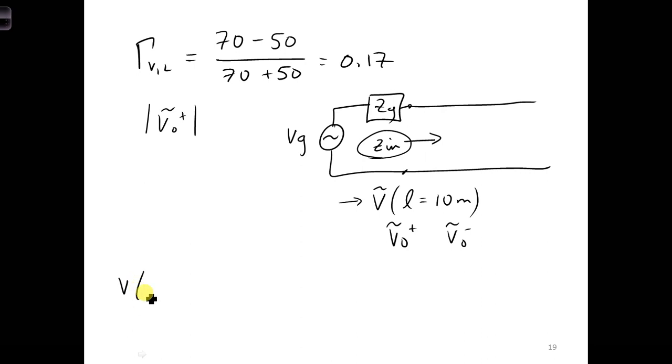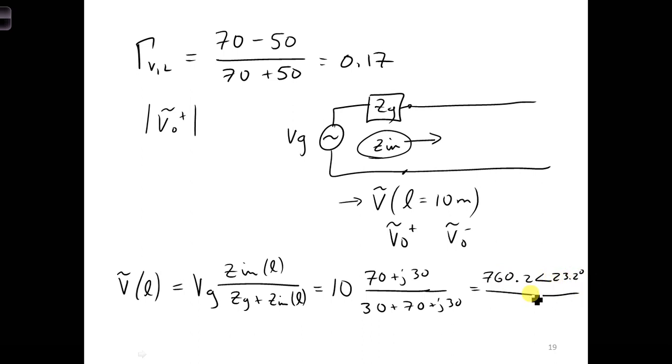Performing this voltage divider, we have Vg times Z in at L over Zg plus Z in at position L, the length of the line. L is equal to 10 meters. This is 70 plus J 30. Zg is 30 plus 70 plus J 30. We can put that in and simplify it to 76.2 at an angle of 23.2 degrees over 104.4 at an angle of 16.7 degrees. Dividing that, we have 7.3 at an angle of 6.5 degrees.